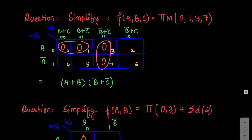Now let's move to a product of sums example. We write pi of max terms. In POS the number of boxes is the same, but you mark zeros in the boxes instead of ones. Also, to represent zero you use the variable itself, and 1 is represented by the complement. So on the MSB side, zero equals A and one equals A-bar.